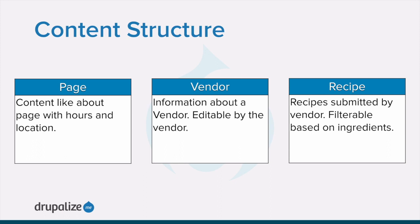Within each content entity type you identified, decide what division into subtypes would make sense. For example, in the farmer's market site, you could probably decide that under the content item entity type, there should be one content type for basic pages like the home page and an about page, one for vendor pages, and one for recipe pages.